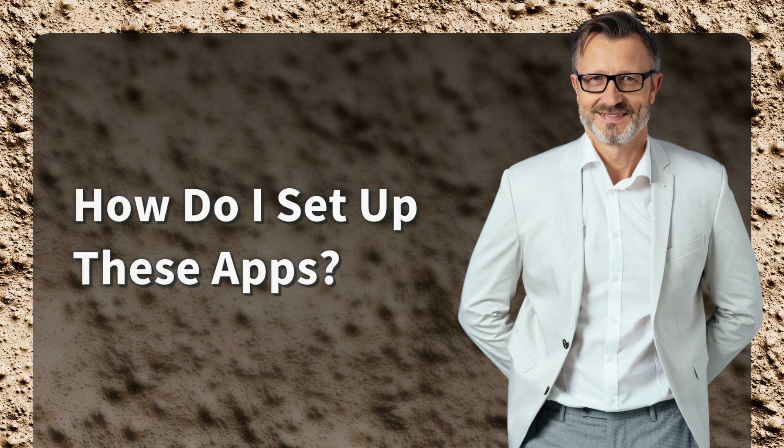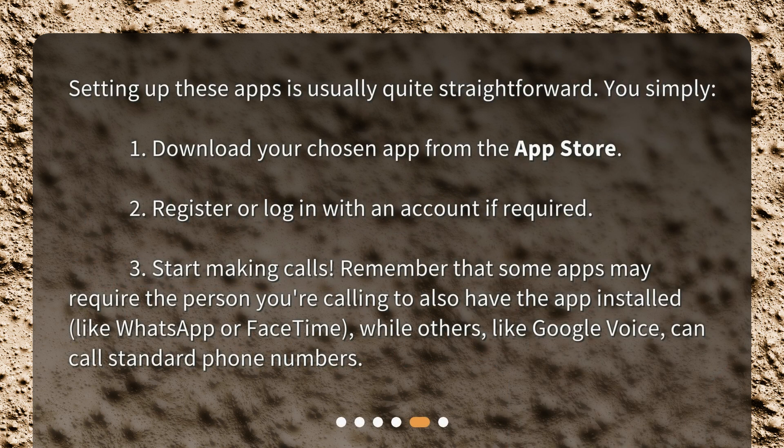How do I set up these apps? Setting up these apps is usually quite straightforward. You simply: 1. Download your chosen app from the App Store. 2. Register or log in with an account if required. 3. Start making calls. Remember that some apps may require the person you're calling to also have the app installed, like WhatsApp or FaceTime, while others, like Google Voice, can call standard phone numbers.